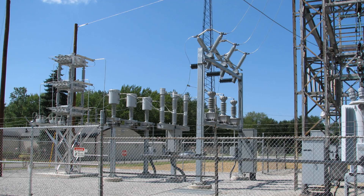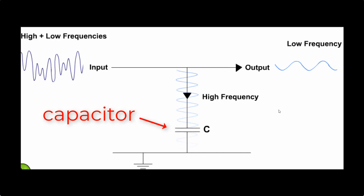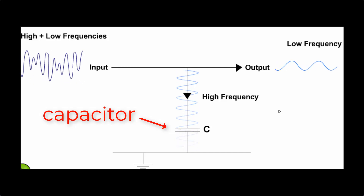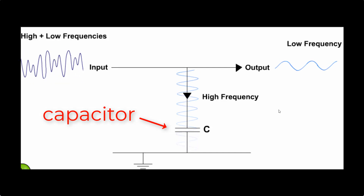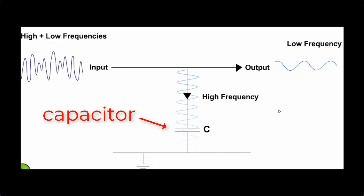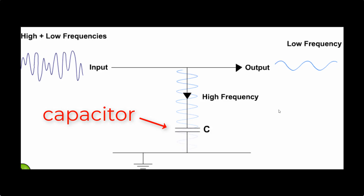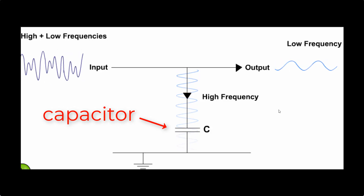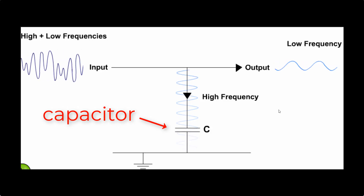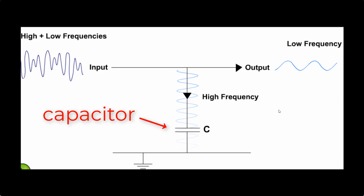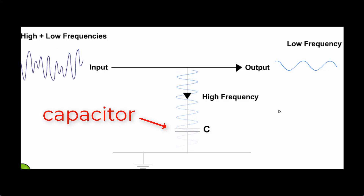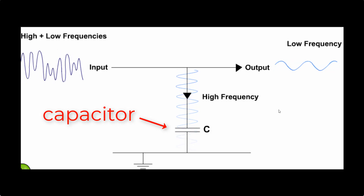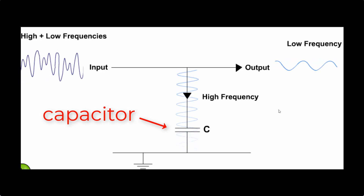Capacitors are used in power transmission to regulate voltage levels. Capacitors are probably most common in filtering circuits. Sometimes they block high frequencies and let the low frequencies through, other times they block the low frequencies and let the high frequencies through. This is important for a ton of different electronics applications.